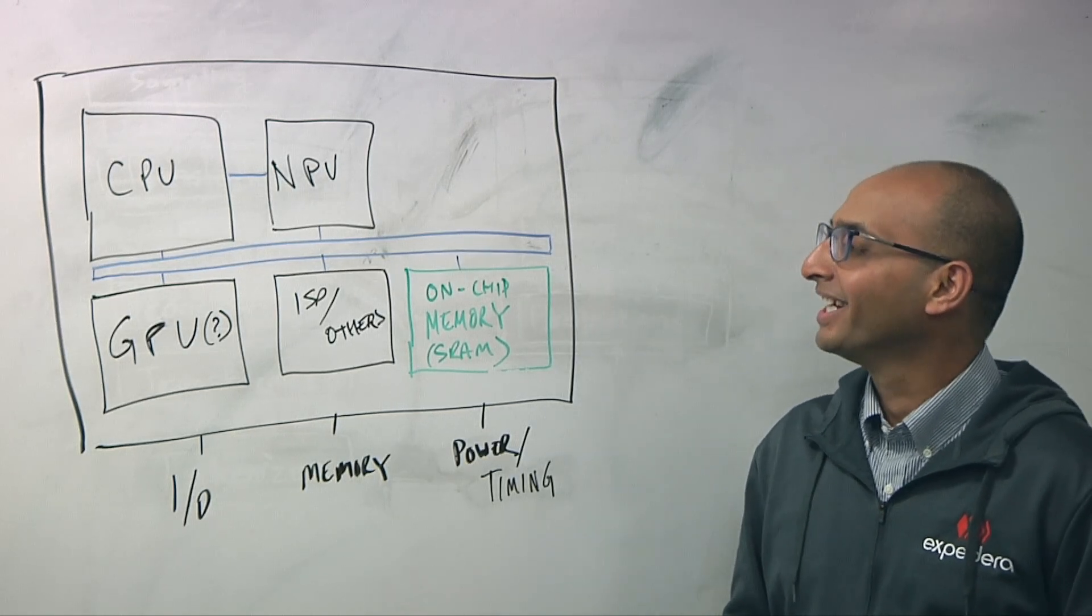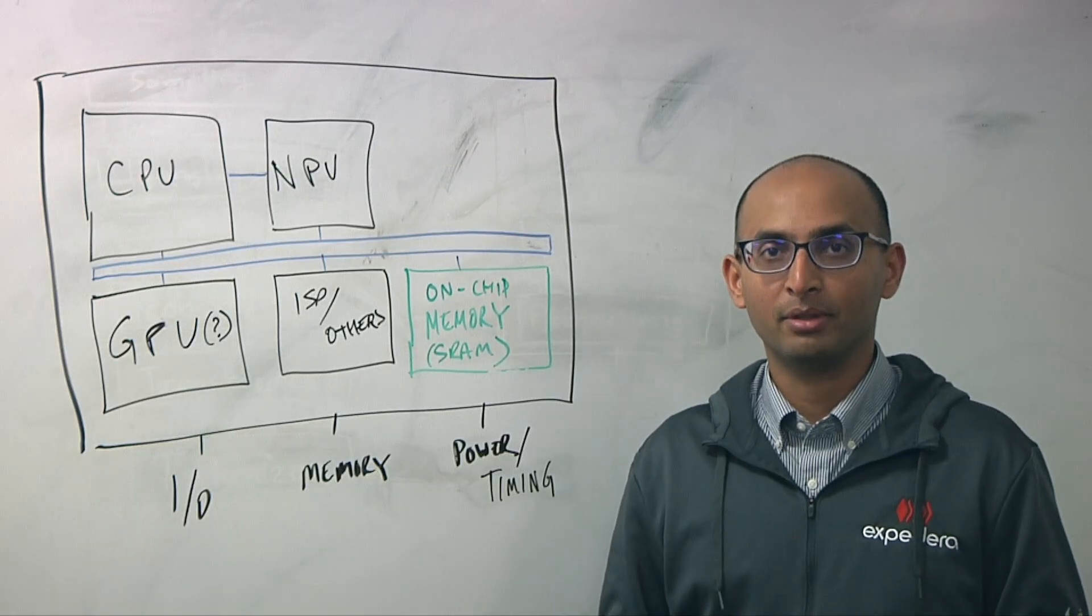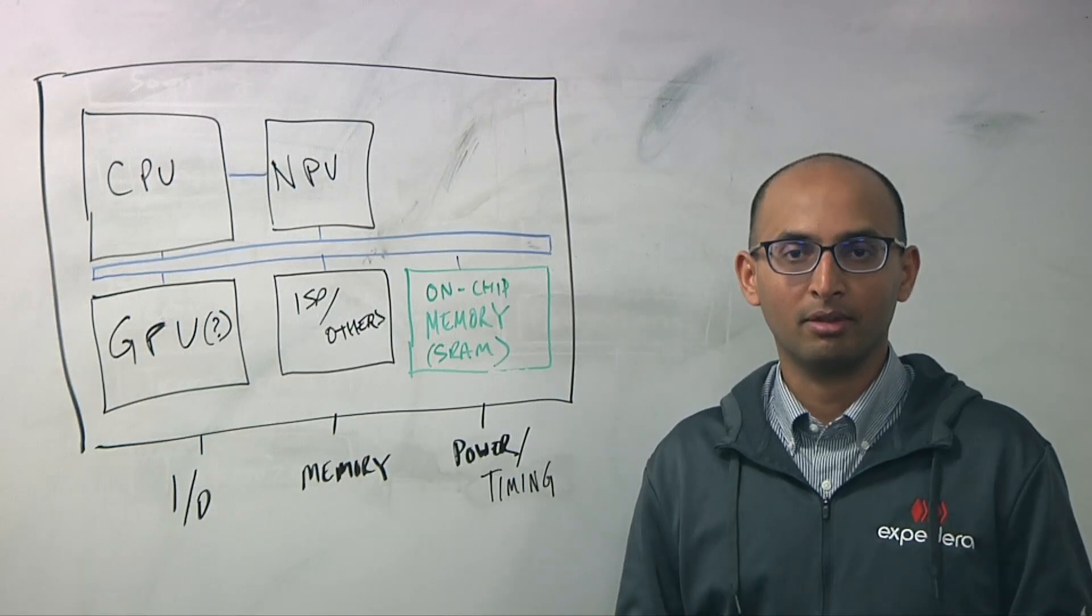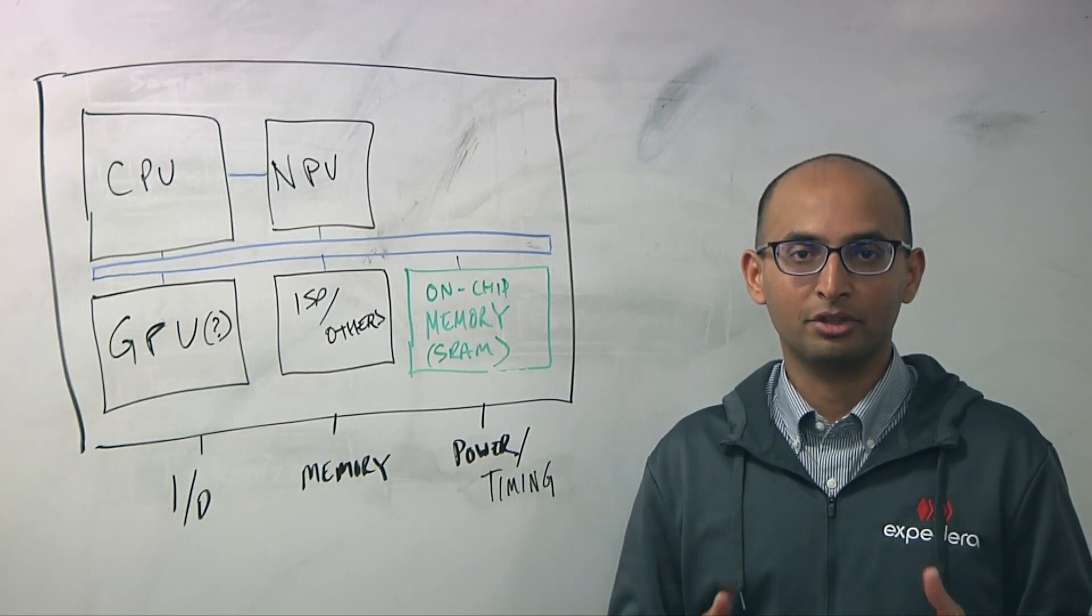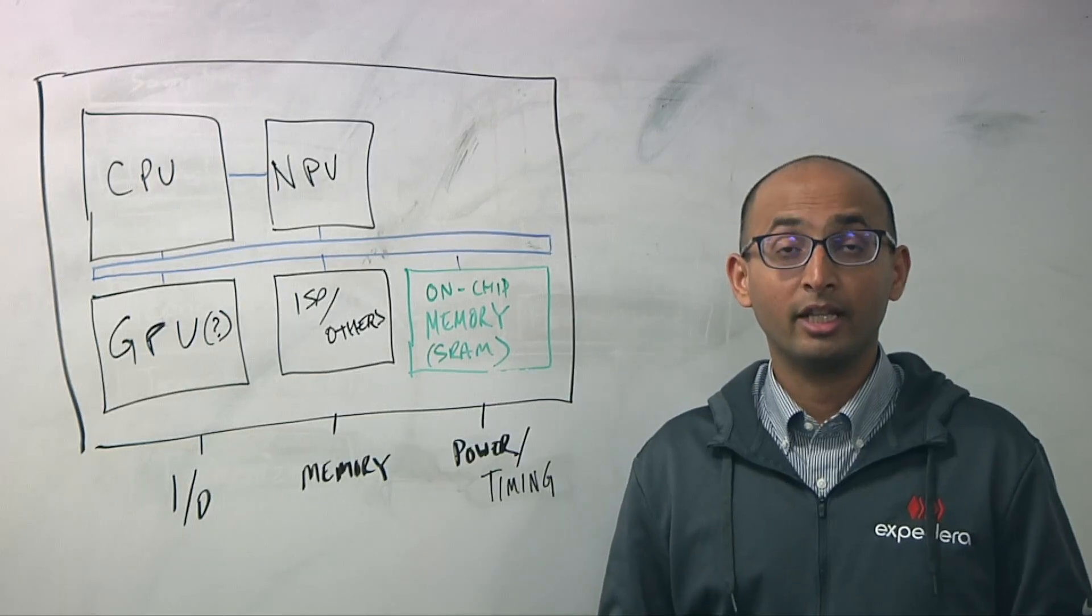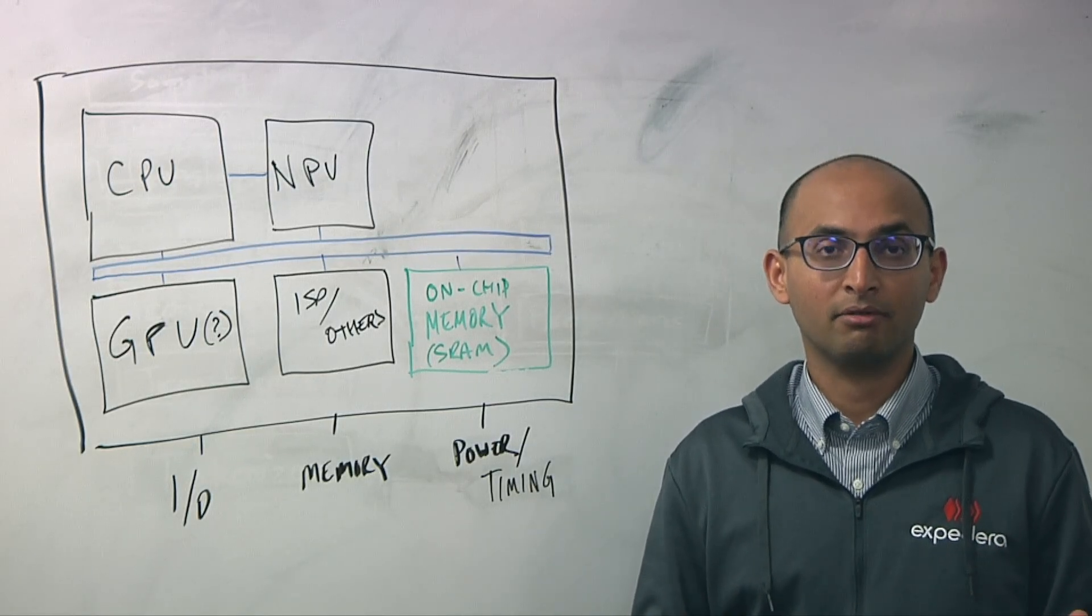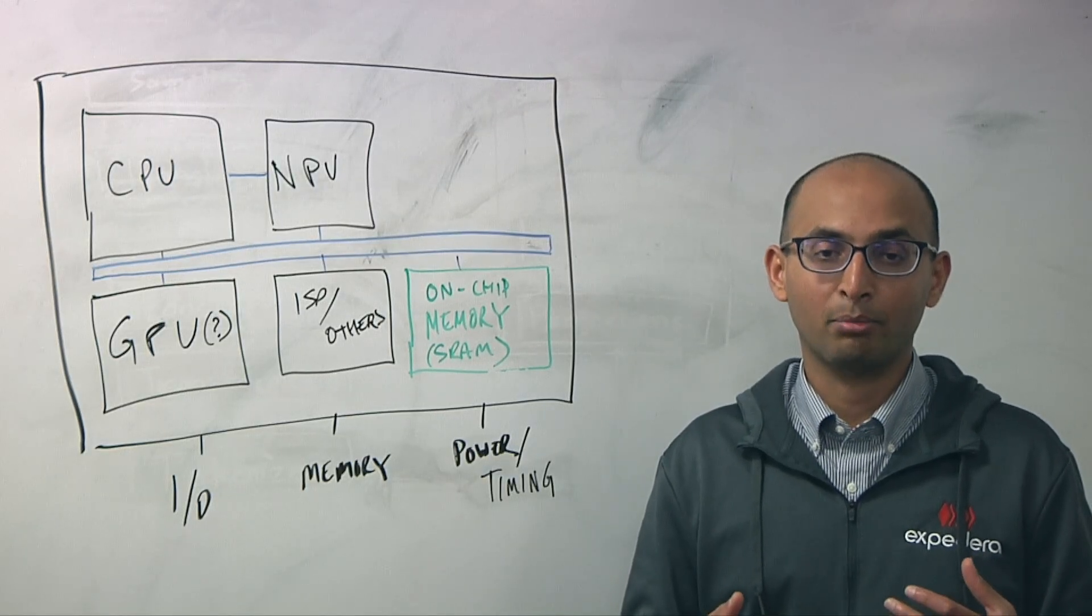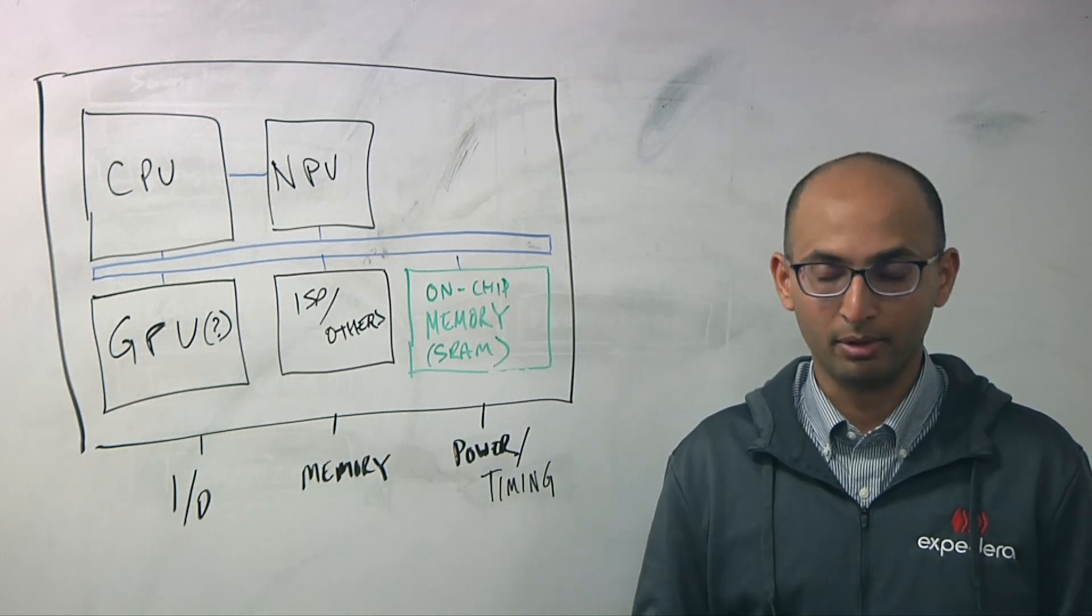That's actually a very good question. So when we are looking into designing an NPU, we are looking at end-to-end workload. We are not looking at a single neural network model. The typical workload that our current customers have is the chain of models that need to run. And these models, if they are running with real-time sensors, will have certain latency requirements. Like we might have to process every one frame every 30 milliseconds for the entire workload.